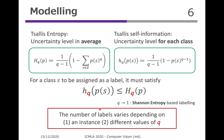In our model, we use Tsallis entropy and Tsallis self-information. First, we calculate Tsallis self-information for an instance, which represents the uncertainty level for each class. Then, by taking the average of Tsallis self-information, we have Tsallis entropy for the instance, which represents uncertainty level on average among all possible classes. In this model, for a class S to be assigned as a label, it must satisfy this inequality. The parameter Q controls this model. Especially when taking the limit of Q to 1, the model is equivalent to a method that uses Shannon entropy and Shannon self-information. The number of labels per instance varies depending on the instance and different values of Q.